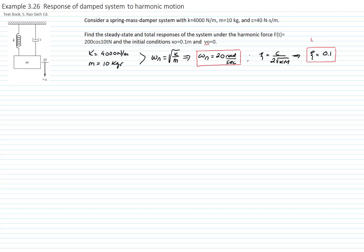This is important because it tells us this is an underdamped system, which gives us the shape of the homogeneous solution. We have the forcing frequency, which is 10 radians per second, and that allows us to calculate the frequency ratio r. The frequency ratio r is the forcing frequency over the natural frequency, and this equals 0.5, meaning we are below the resonance frequency.